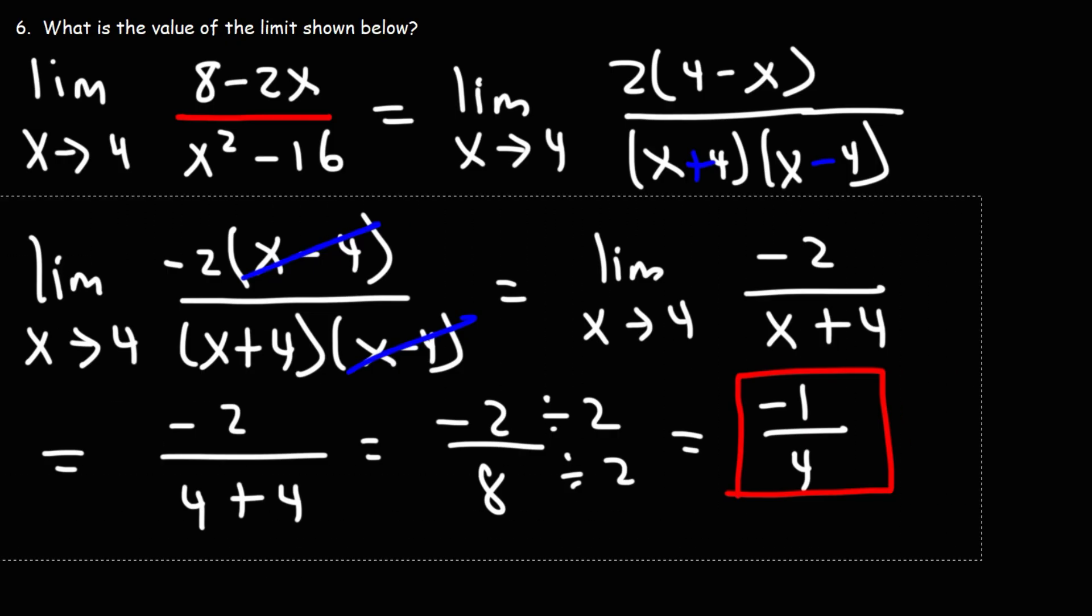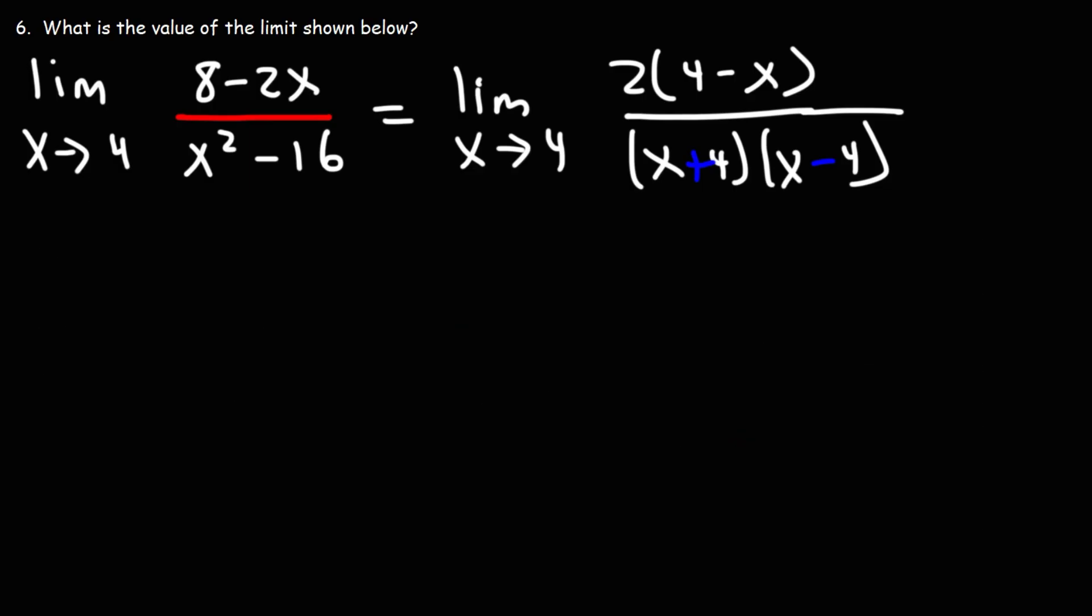By the way, to check this answer, if you're allowed to use calculators on your exam, you can plug in a number that's very close to four. So let's say we plug in 4.1: eight minus two times 4.1, that's negative 0.2, and then plugging into the bottom, 4.1 squared minus 16, that's 0.81. If we divide negative 0.2 by 0.81, we get negative 0.2469. That's actually very close to negative one over four, which is negative 0.25.